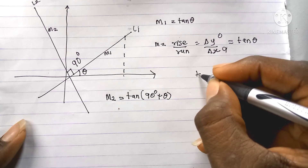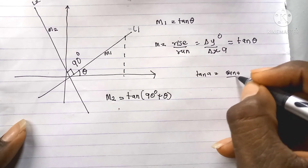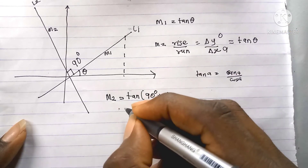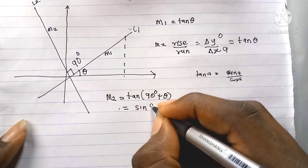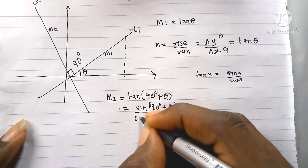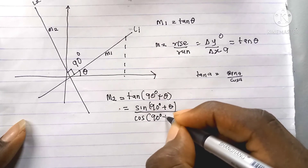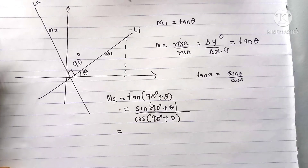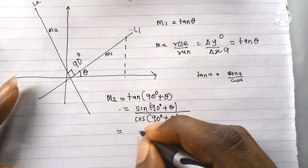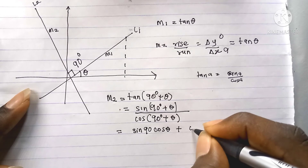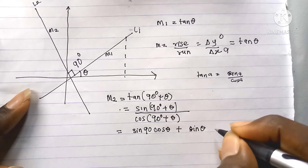We know that tan a equals sine a over cosine a, so tan(90 + θ) equals sine(90 + θ) all over cos(90 + θ). Expanding the numerator using the sine sum formula: sin(90 + θ) equals sin 90 cos θ plus cos 90 sin θ. Expanding the denominator: cos(90 + θ) equals cos 90 cos θ minus sin 90 sin θ.